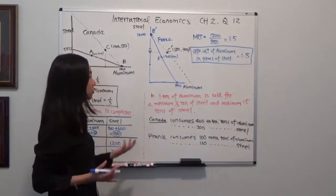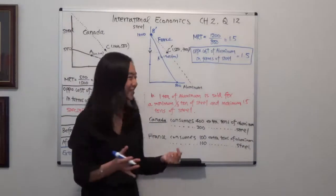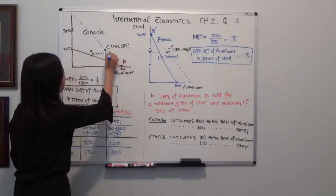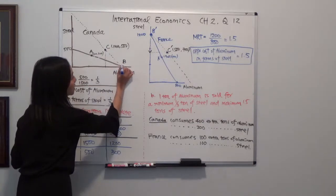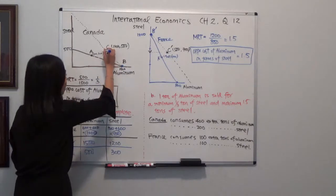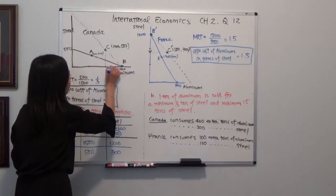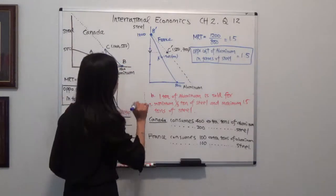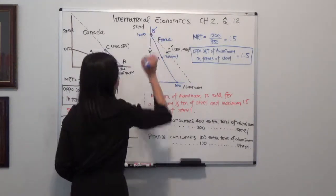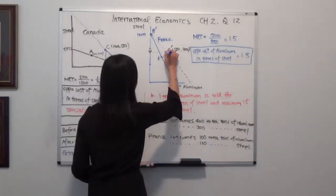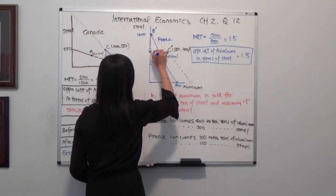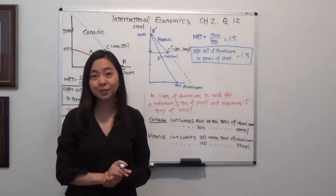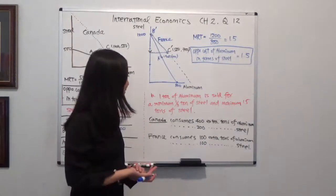Finally, you're required to describe the trade triangle. For Canada, it goes from point B to point C — we are producing at B and consuming at C, so that triangle is Canada's trade triangle. For France, we specialize at point B prime and consume at point C prime, forming France's trade triangle. I hope this helps, and I'll see you next time.